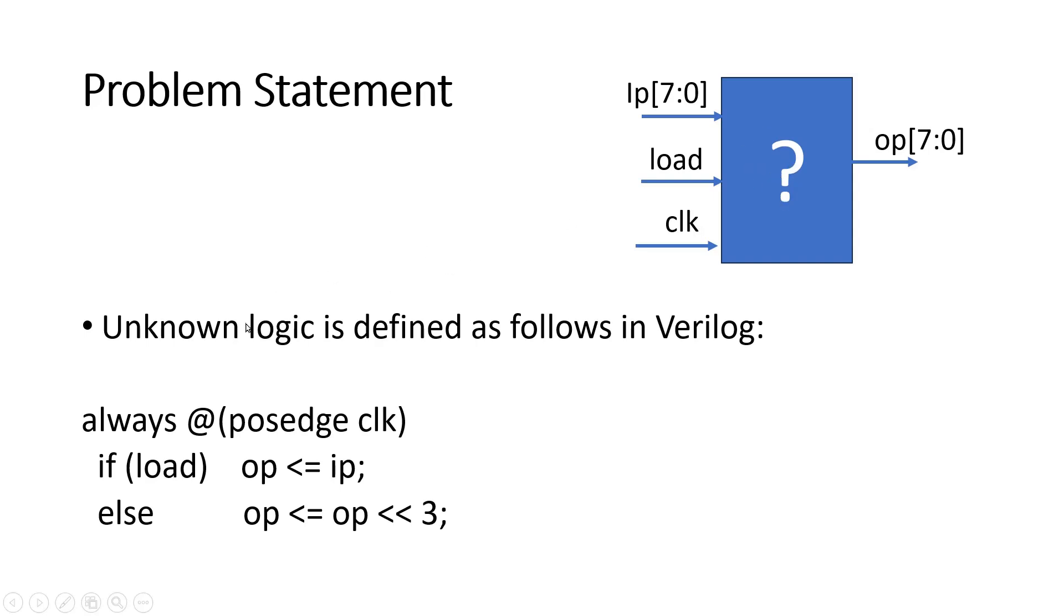This unknown logic is defined as follows with the help of Verilog language: always at the positive edge of the clock, whenever there is a positive edge on this clock, if load signal is high then output will be equal to input, else output will be equal to 3 times left shifted version of the output only.